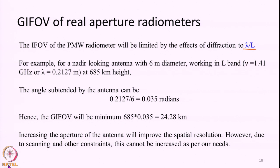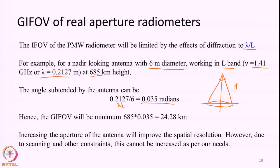If we take a look at the SMAP satellite, the antenna has a 6-meter diameter and works in L-band at 1.41 gigahertz, so lambda is roughly 21 centimeters, at a height of 685 kilometers. Calculating lambda by L gives an angle of 0.035 radians subtended by the antenna on the ground. Multiplying the orbital height by this angle gives us a footprint of roughly 24.2 kilometers. This is a minimum value beyond which the JFOV cannot become finer. SMAP actually acquires data at around 40 kilometers resolution, which is much coarser, but 24.2 km is the minimum limit.